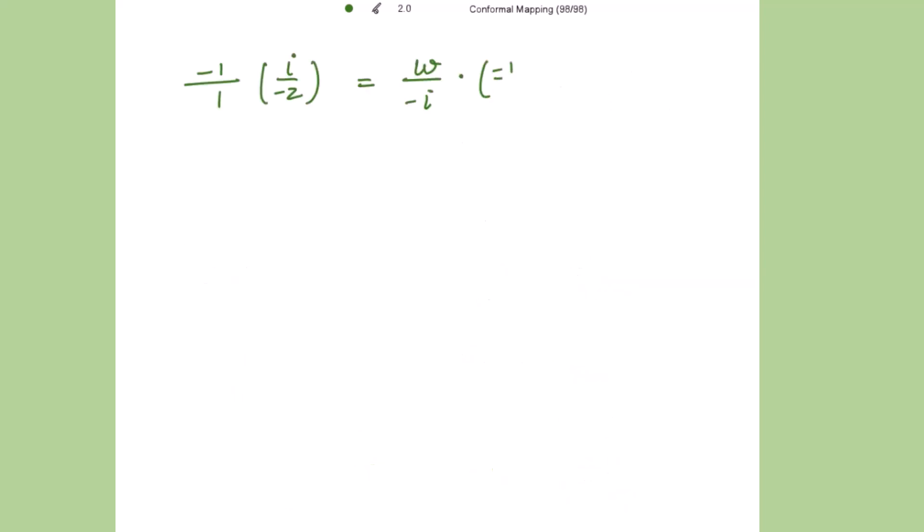So that is negative 1 over 1. This implies, cancelling this negative sign, I get iota over z. This is equal to, cancelling this also, w over iota. Taking this iota to the other side, I get iota square over z equal to w, or I can write it as w equal to iota square over z. That is equal to negative 1 over z.